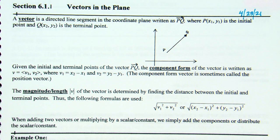By definition, a vector is a directed line segment in the coordinate plane written as vector PQ, where P — point X1, Y1 — is the initial point, and Q — point X2, Y2 — is the terminal point. It looks a lot like a ray — it has an arrow on one end. The key is it's a directed line segment.